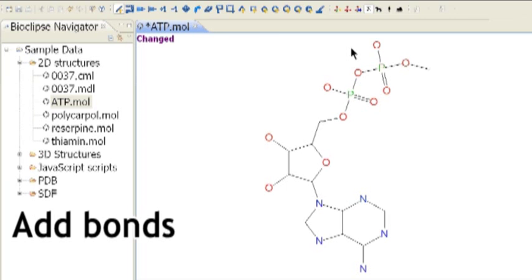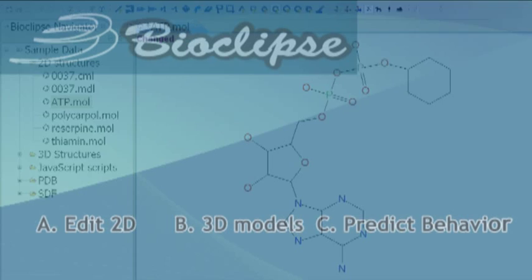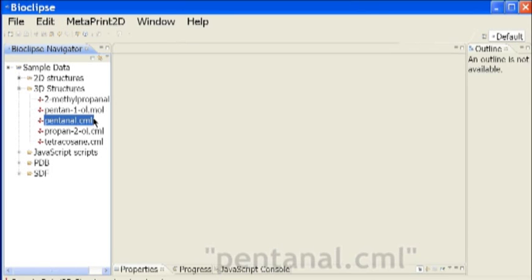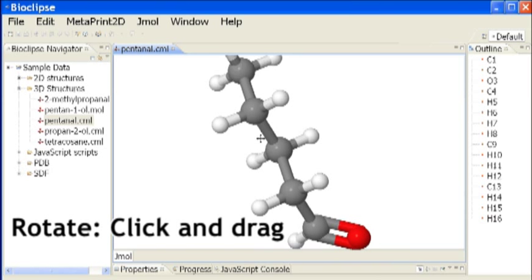Bioclipse provides 3D modeling by integrating JMol. From the left navigator 3D structures folder, open pentanol.cml. To rotate the molecule, click and drag within the view panel.